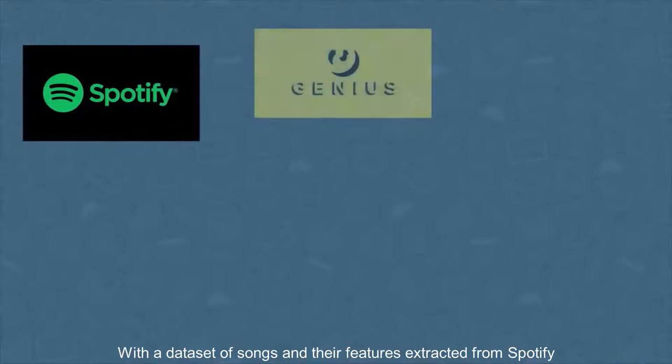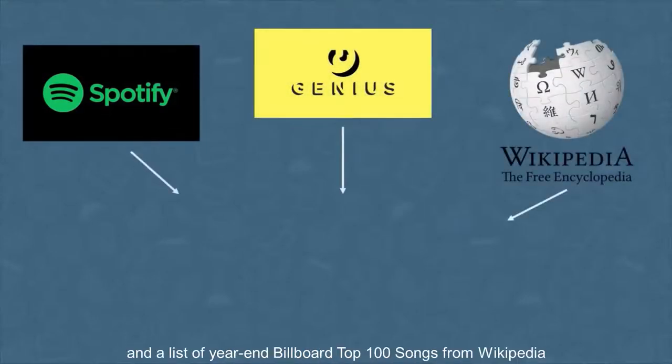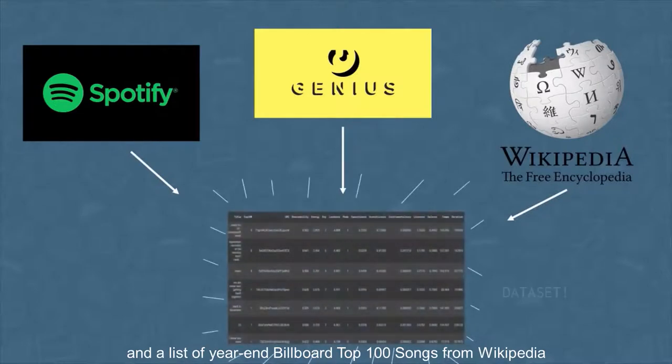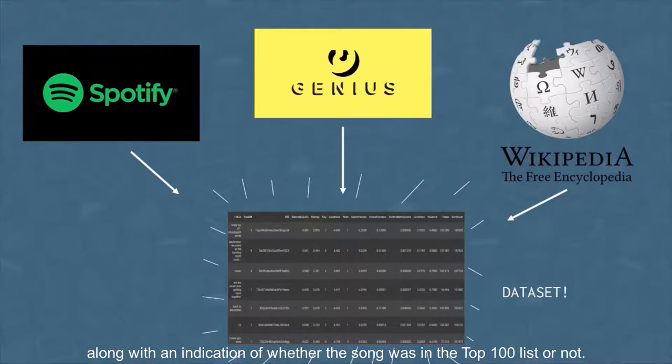With a dataset of songs and their features extracted from Spotify, lyrics extracted from the Genius API, and the list of year-end Billboard Top 100 songs from Wikipedia, we compiled a comprehensive dataset of songs with various features, along with an indication of whether the song was in the Top 100 list or not.